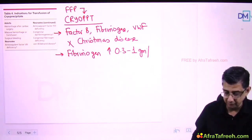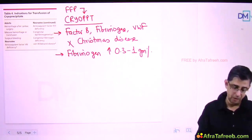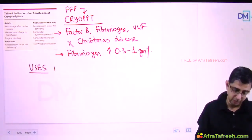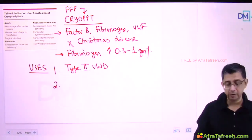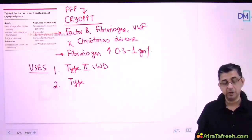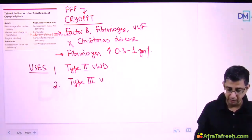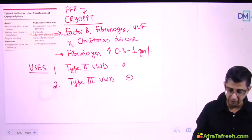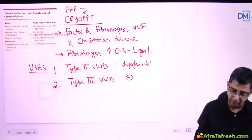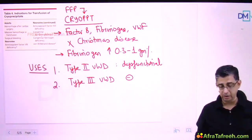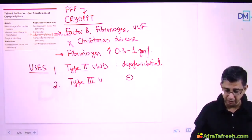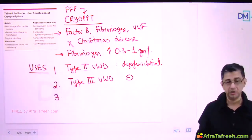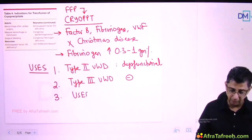This explains why cryoprecipitate can be used in persons with coagulopathies. An important MCQ use is management of von Willebrand disease - type 2 is characterized by dysfunctional von Willebrand factor, whereas type 3 is characterized by absence of von Willebrand factor. Both types benefit from cryoprecipitate. It can also be used if continuous bleeding occurs after surgical intervention.